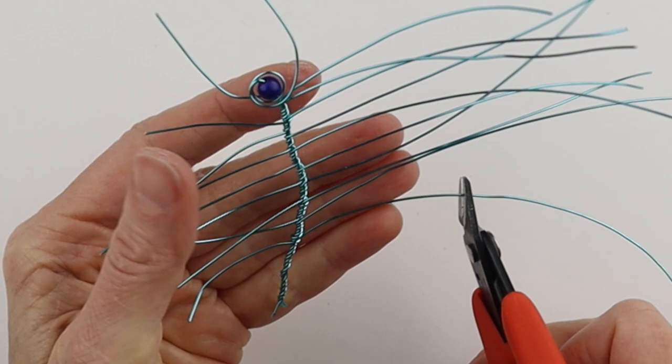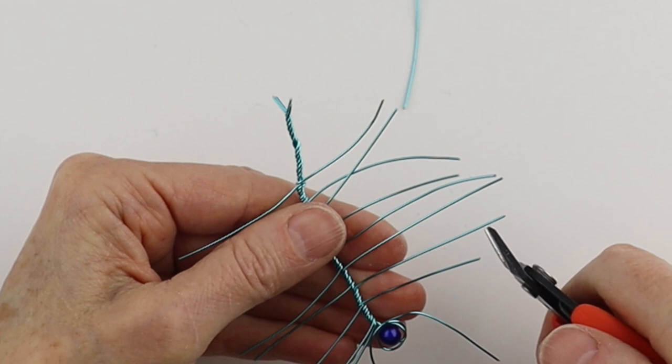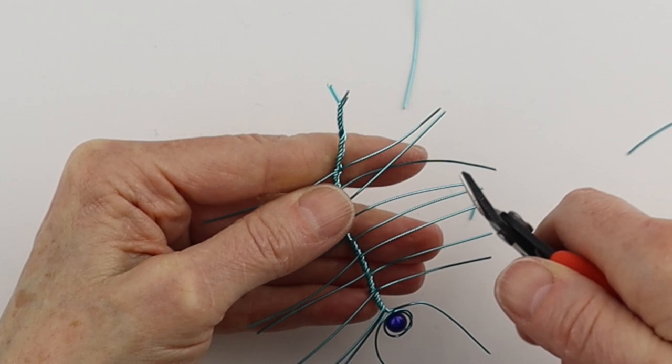These wires ended up being way too long so we can just go ahead and trim these. And the same on this side. You can measure them or you can eyeball them.